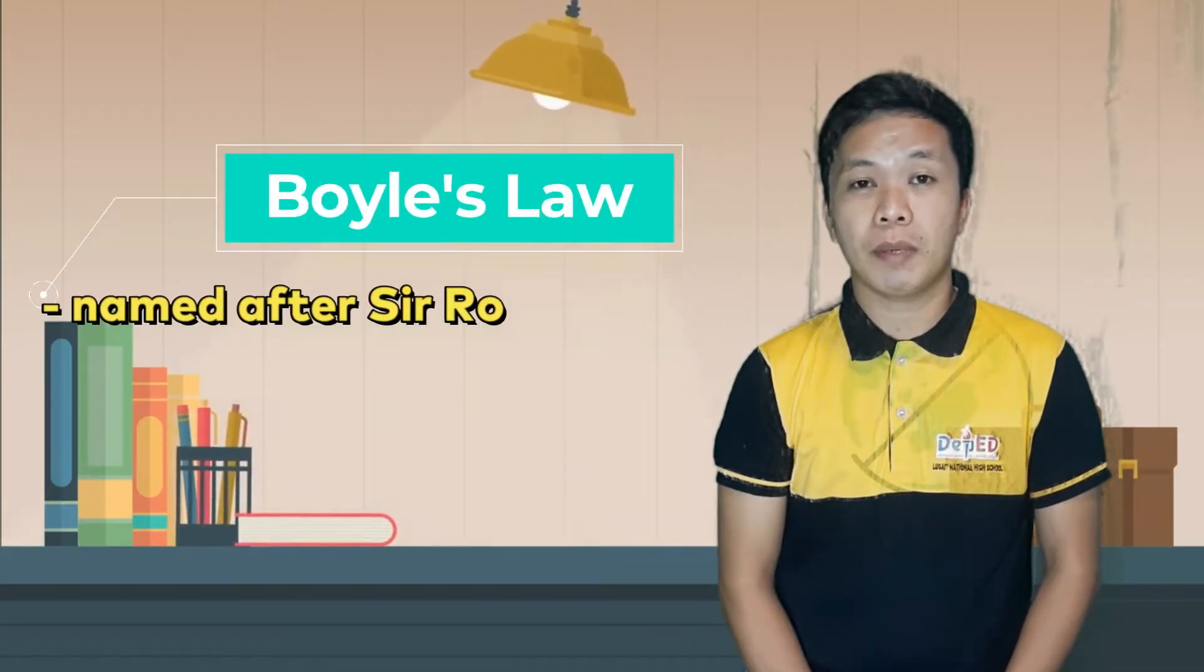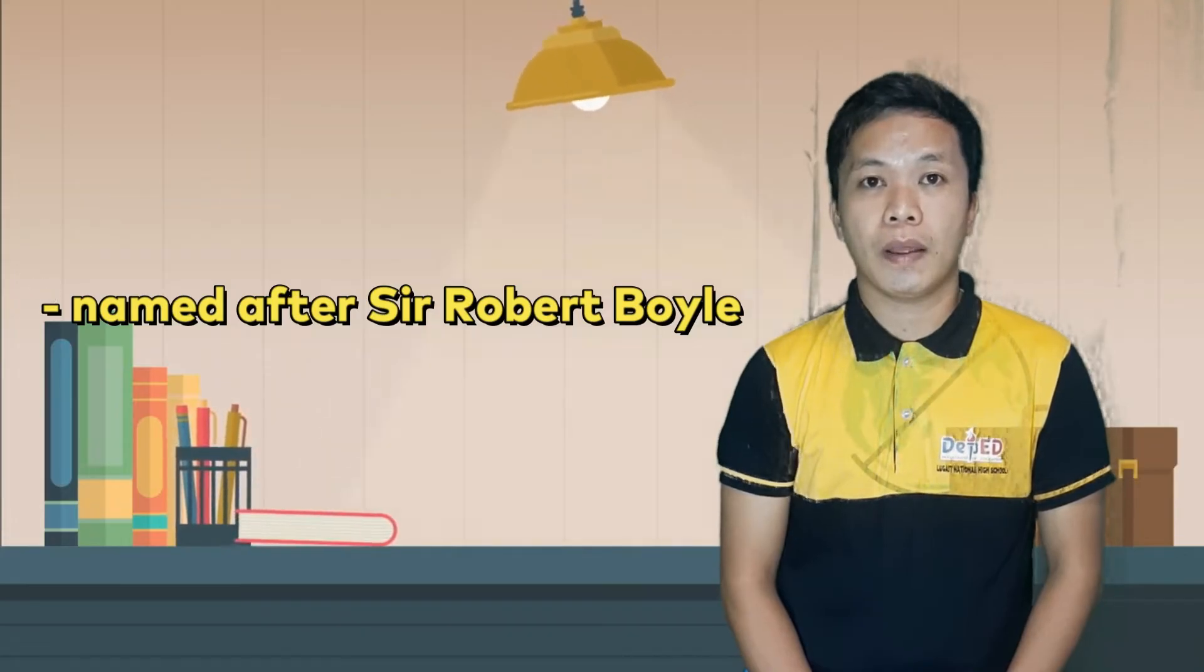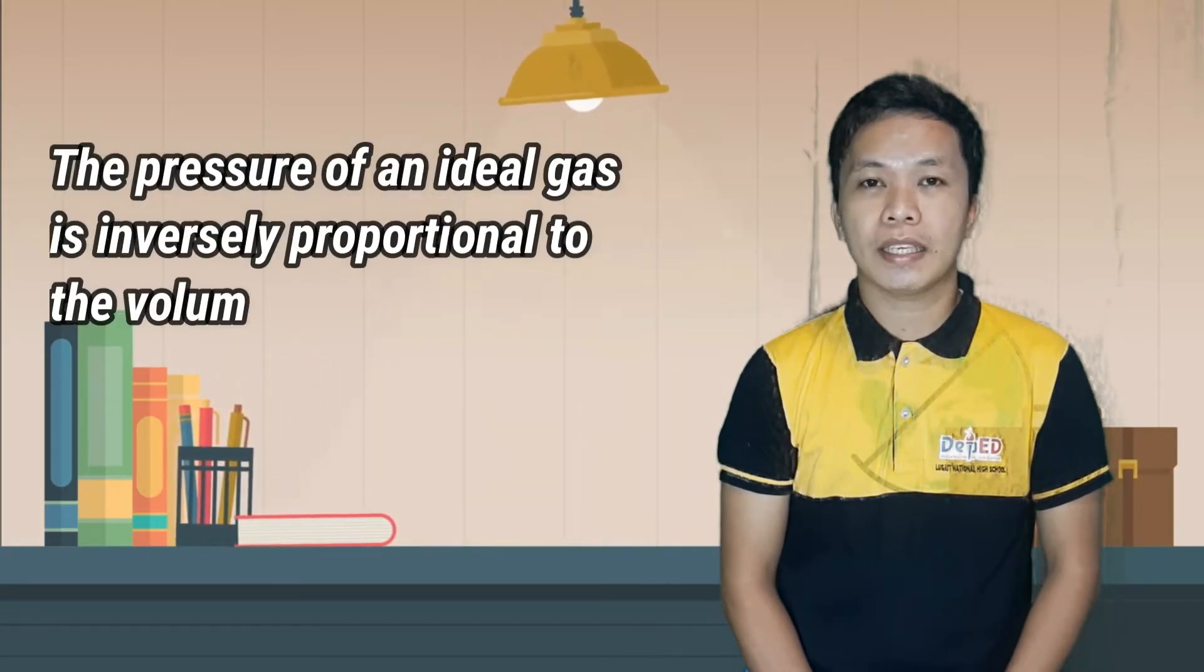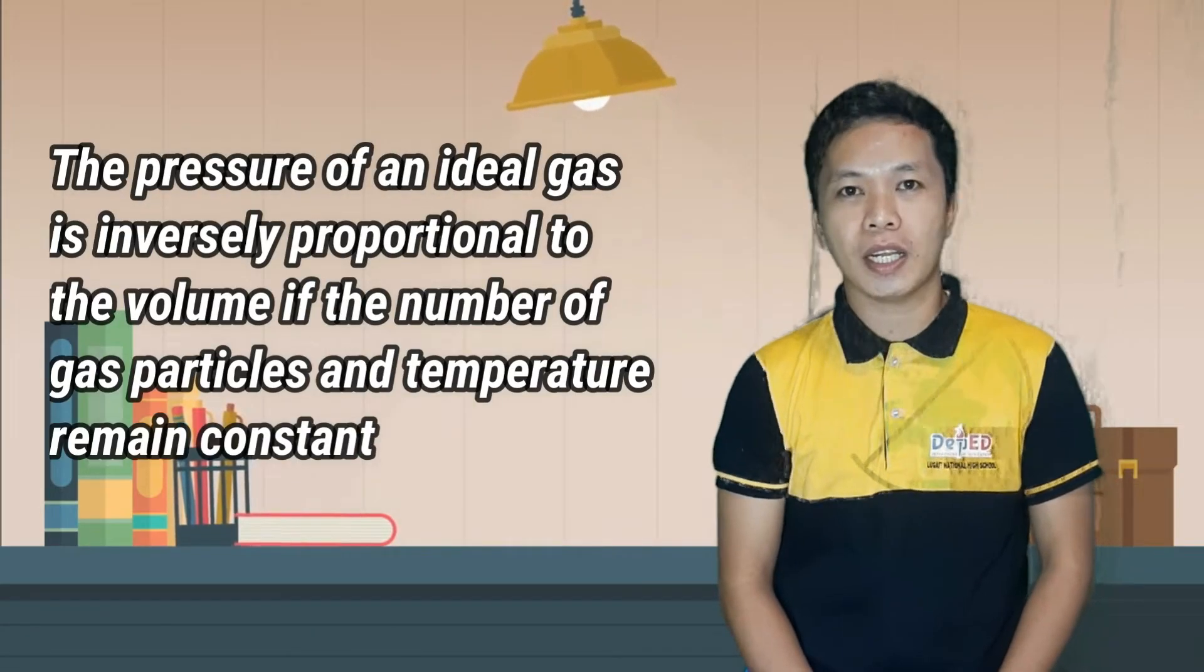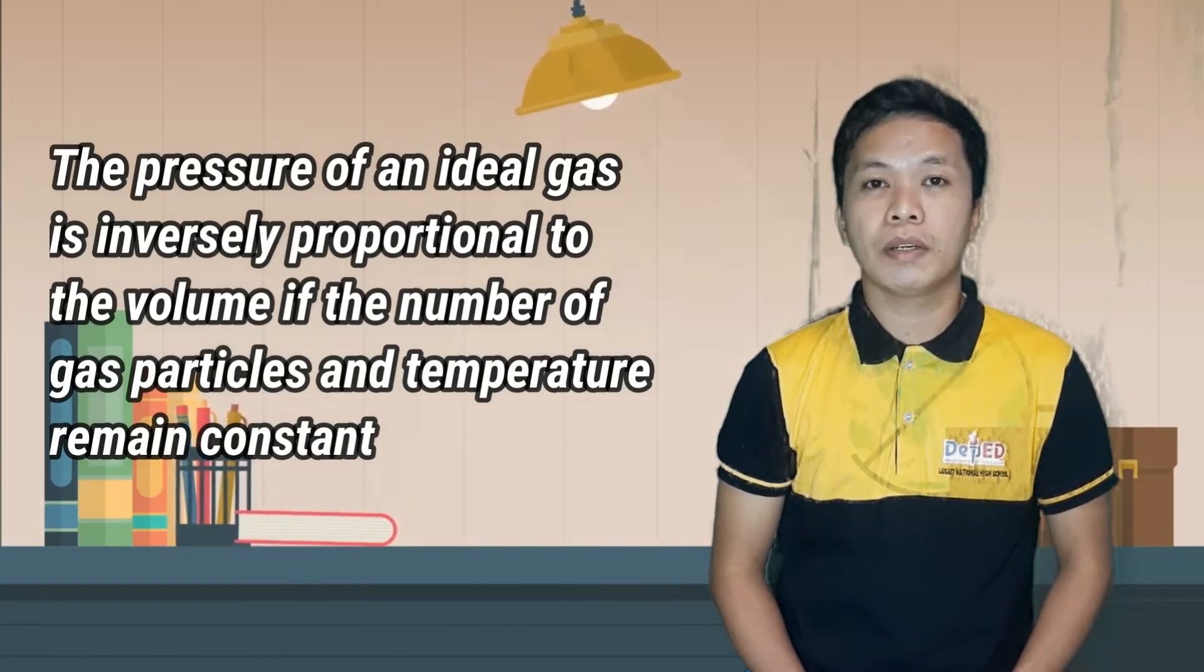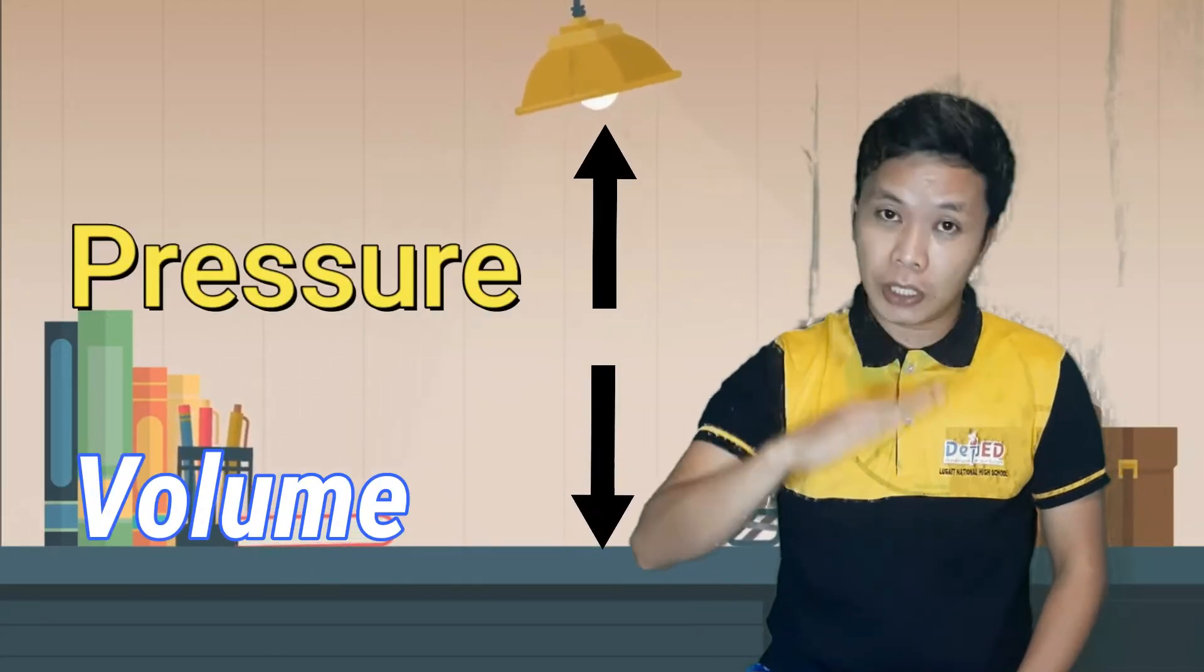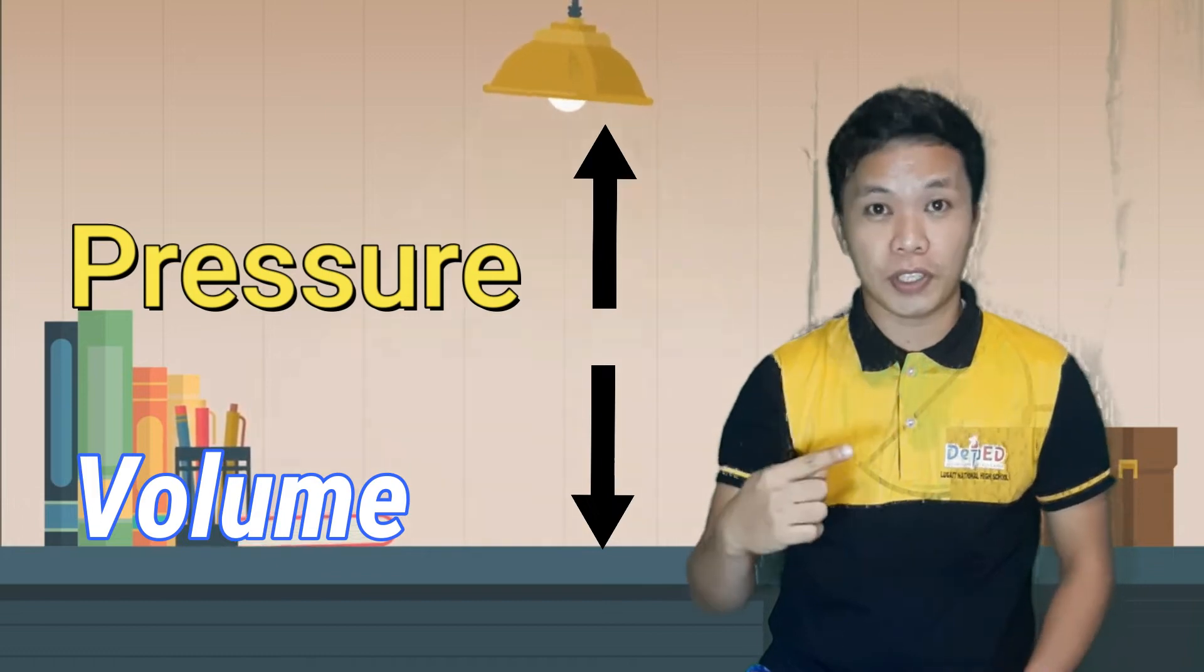This law was named after Sir Robert Boyle, way back 17th century, where it states that the pressure of an ideal gas is inversely proportional to the volume if the number of gas particles and temperature remain constant. Meaning, if the pressure increases, the volume decreases, or vice versa.